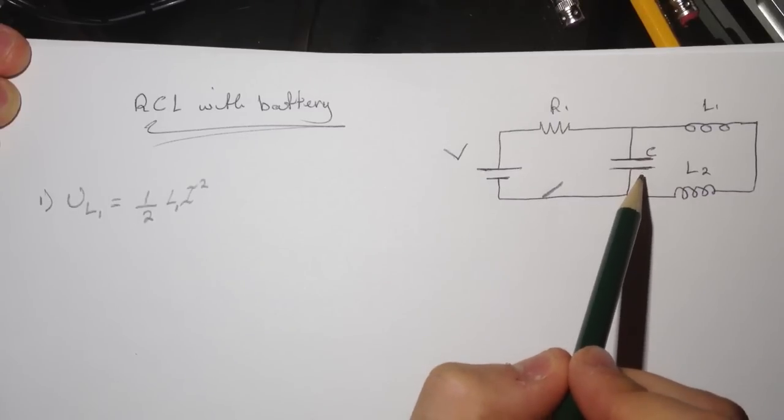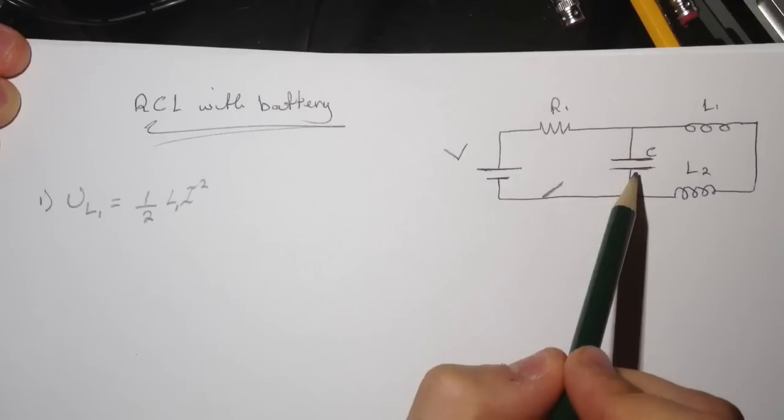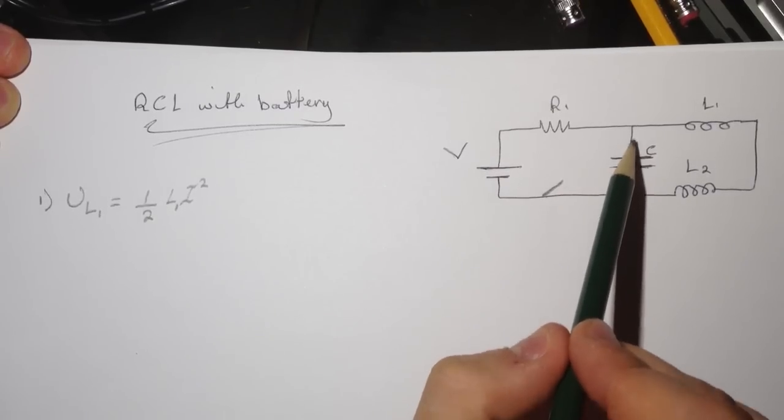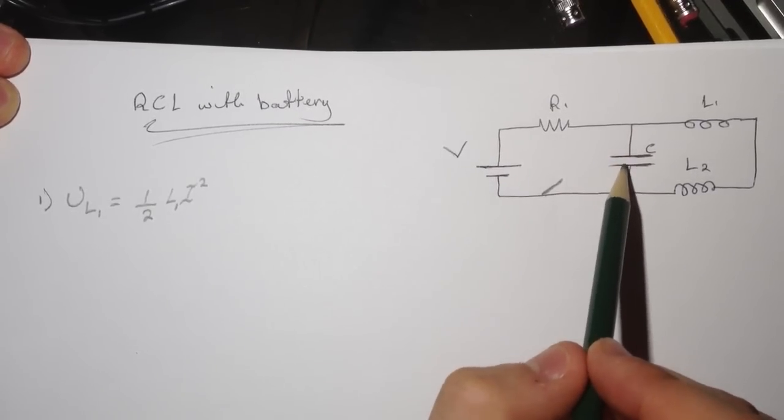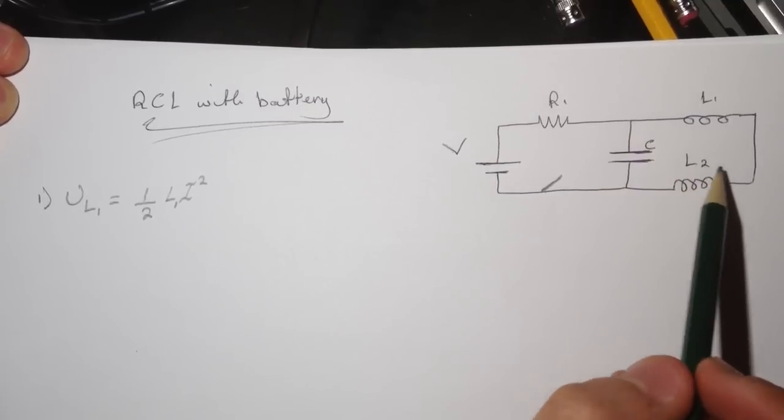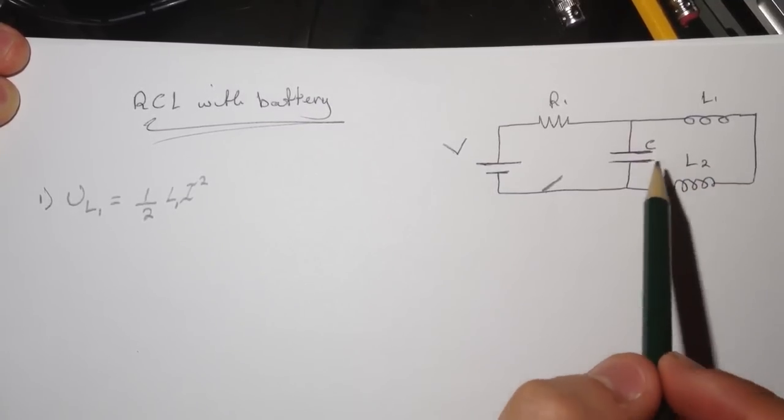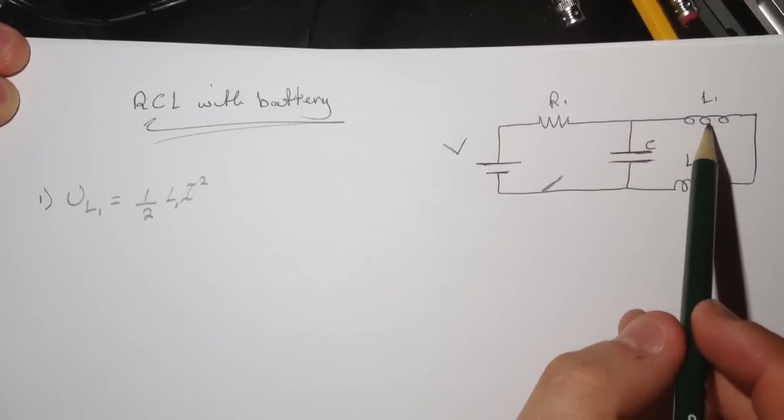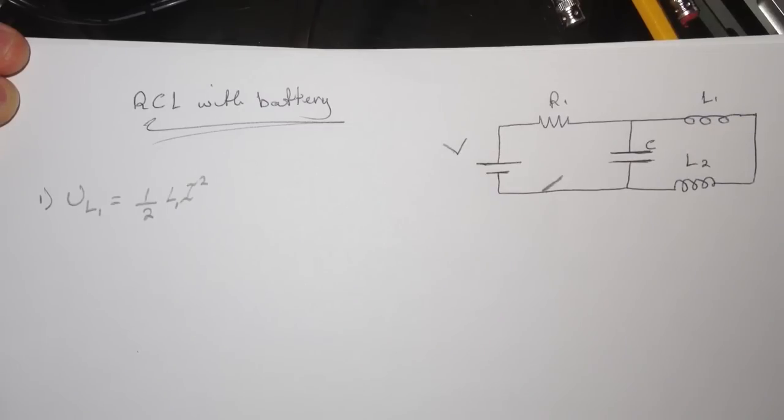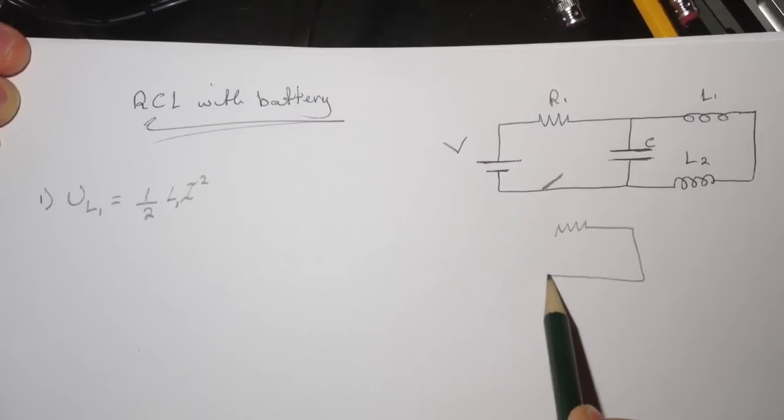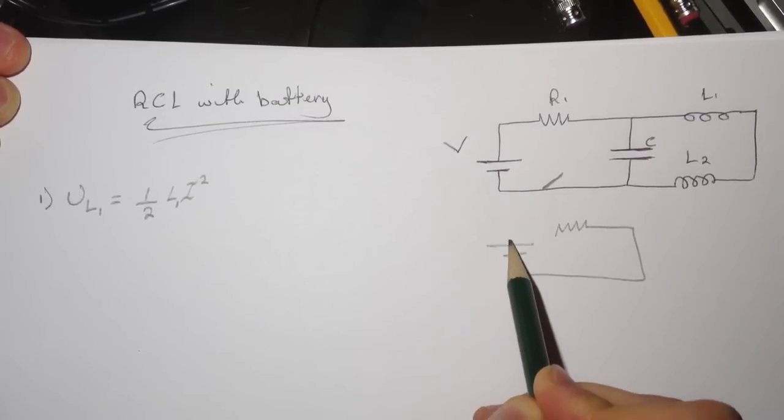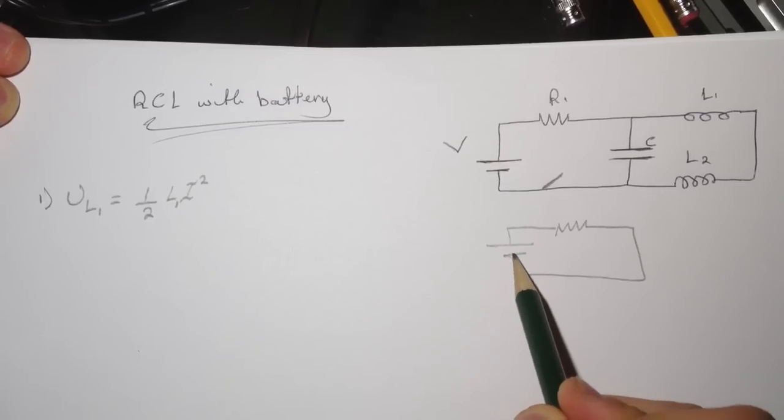Before this switch was open, the capacitor will be acting like an open wire because it has a lot of charge on it, and the inductor will be acting like a wire. So the circuit will look like this now, just going to be a simple circuit with a battery and just a resistor.